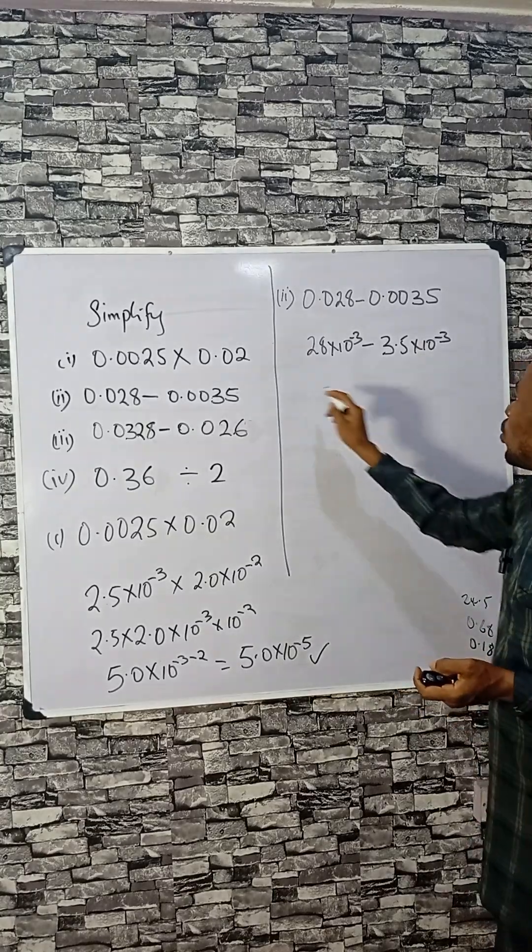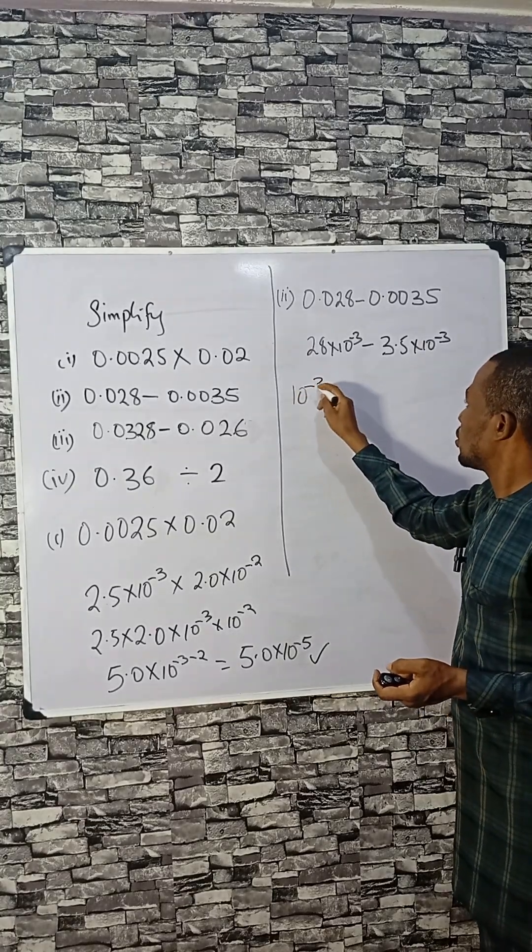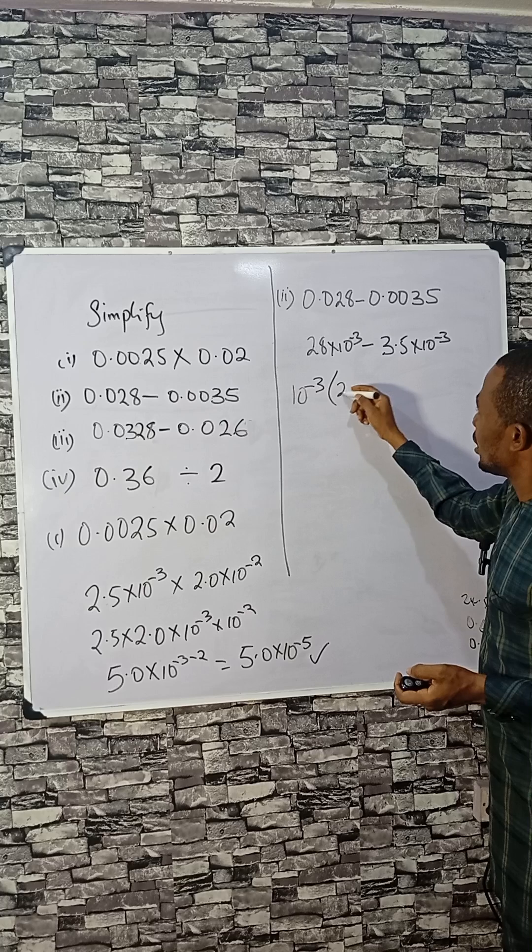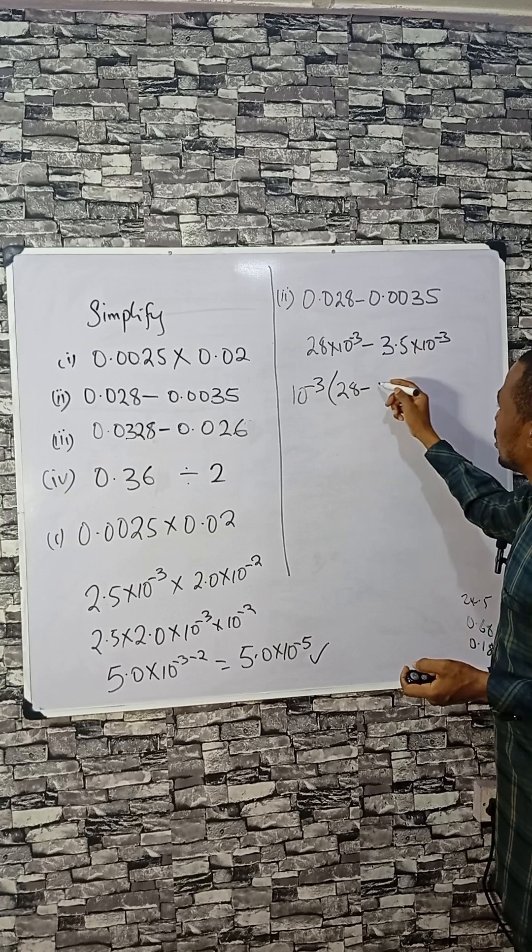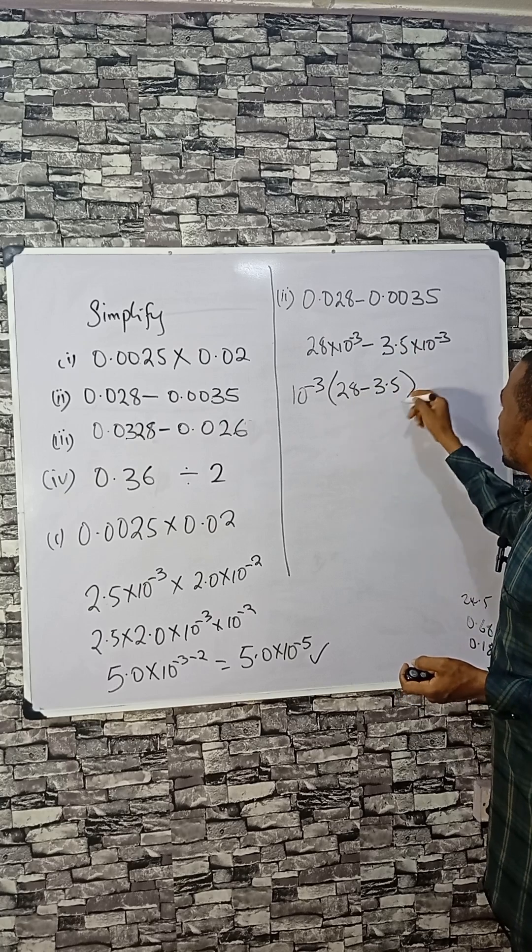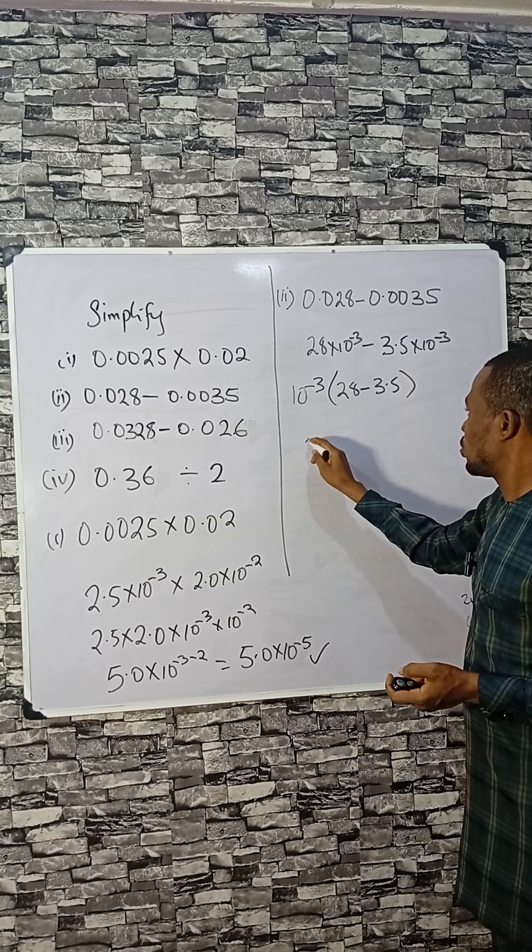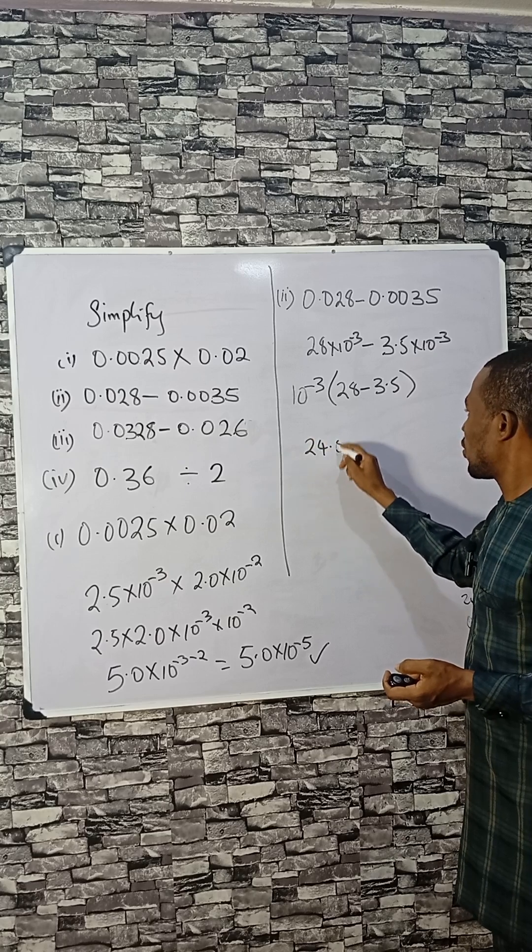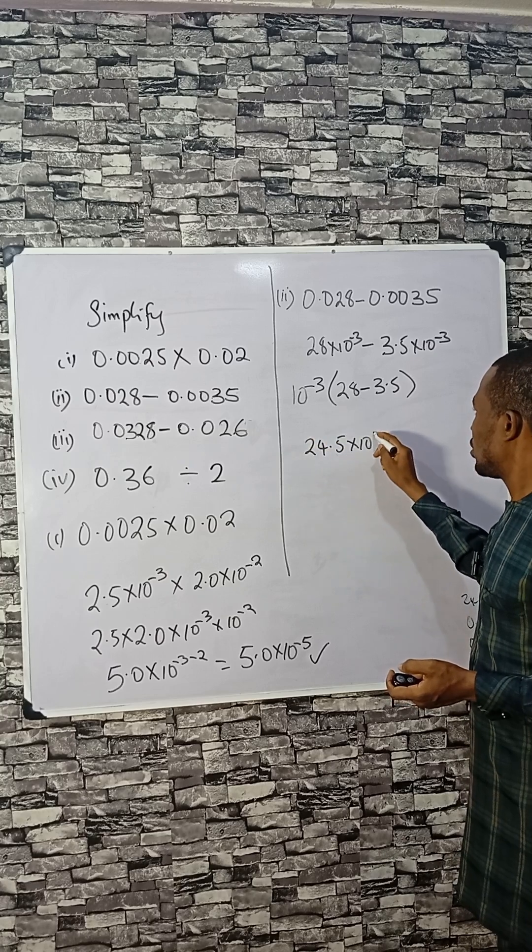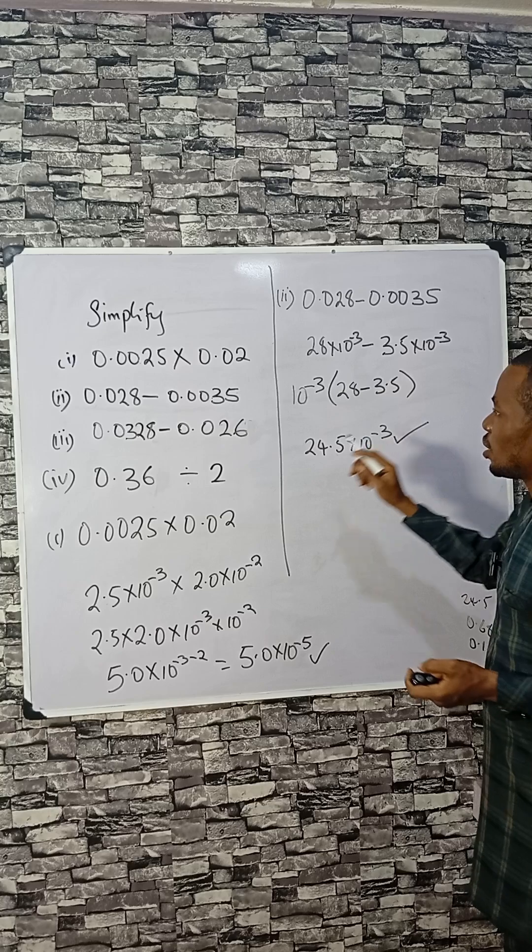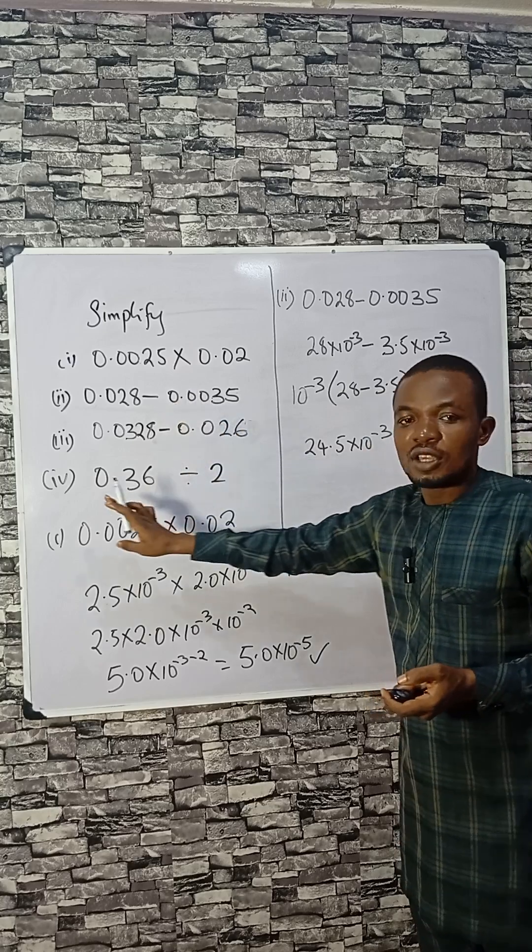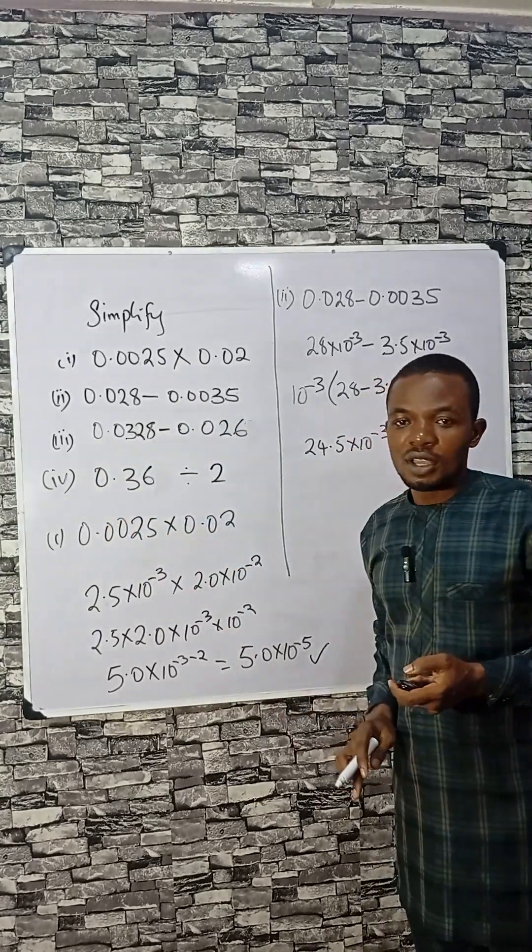Now, since 10 raised by minus 3 is common, 28 minus 3.5, you'll have it as 24.5 times 10 raised by minus 3. That is for number 2. Let's do number 3 and number 4 in the next video.